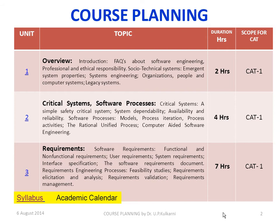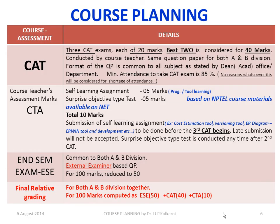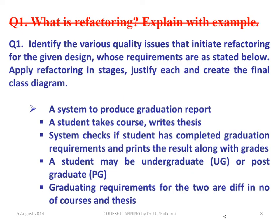This is the course planning — how we cover the portions for CAT 1, CAT 2, and CAT 3, along with reference books. We also describe our game plan for CTA assessment, how we do CAD assessment, how we conduct end-semester exams, and finally how grading is done. Question types include objective type, fill in the blanks, true or false, match the following, and descriptive type, as defined by the office of the Dean of Academic Programs.